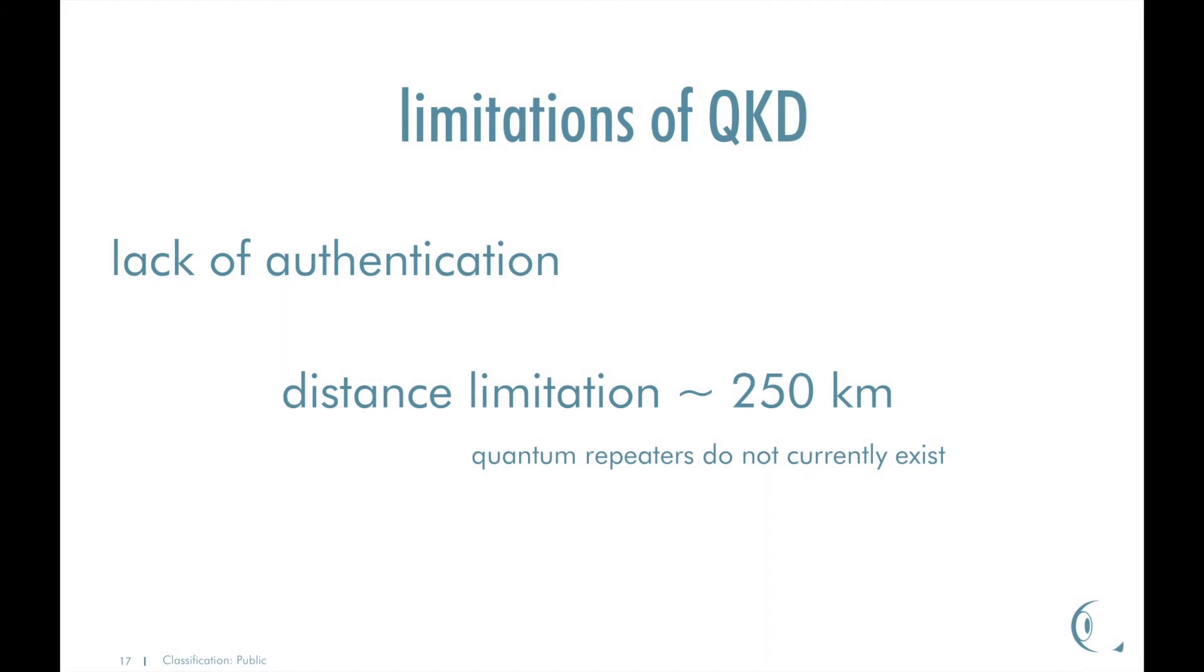However, there are limitations with quantum key distribution, such as lack of authentication in order to prevent man-in-the-middle attack. Also the distance limitation. Currently there is a limitation of 250 km, since quantum repeaters do not currently exist.